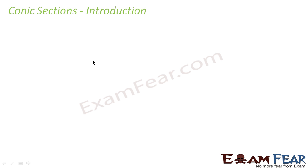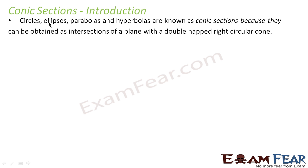What are conic sections? Circle, ellipse, parabola, and hyperbola are known as conic sections. They are called conic sections because they can be obtained as the intersection of a plane with a double nappe circular cone.